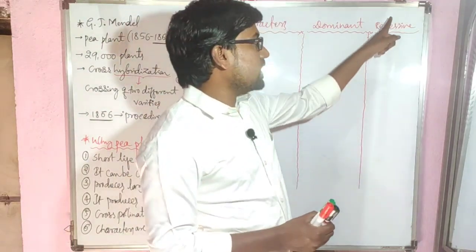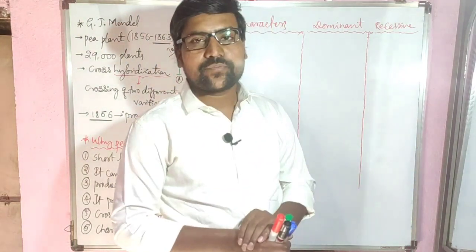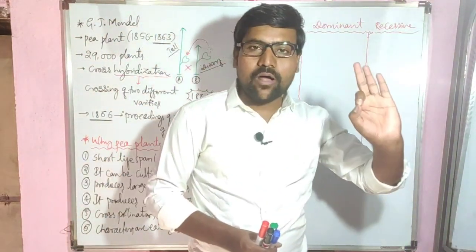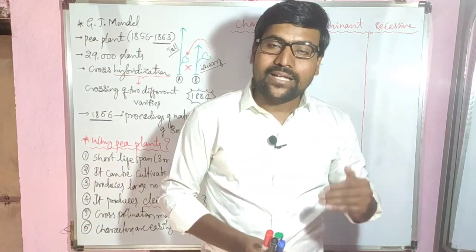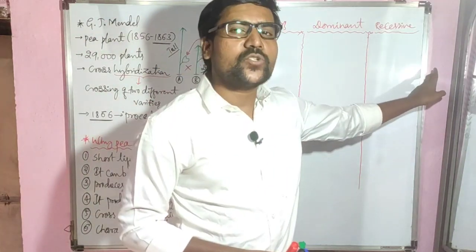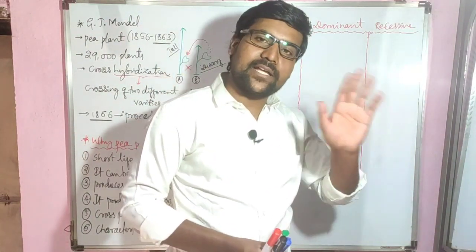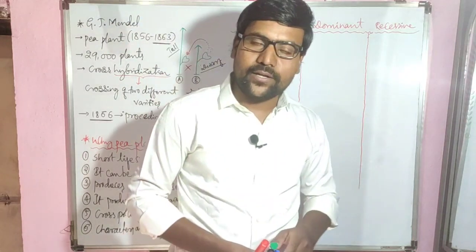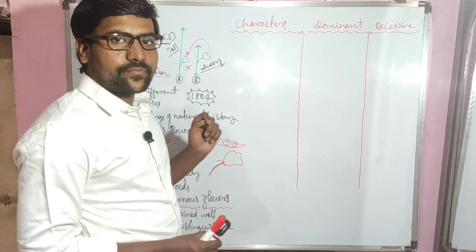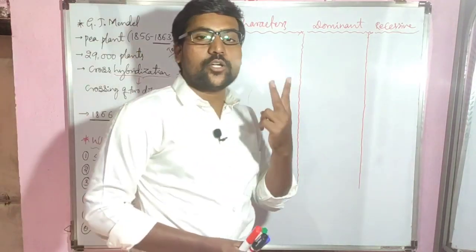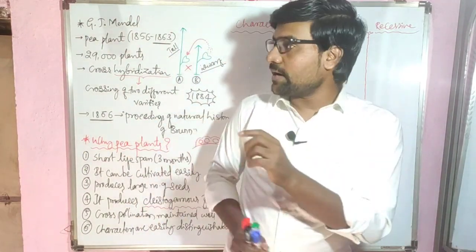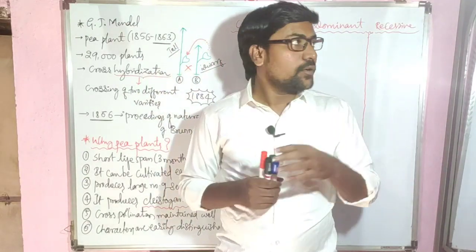For one form, Mendel named it the dominant form, and the other he named recessive. Dominant means the form which is expressing more. Recessive means the form which will not express. For example, tall and dwarf are two forms of one character — height. The form which expresses is dominant; the one which does not express is recessive.